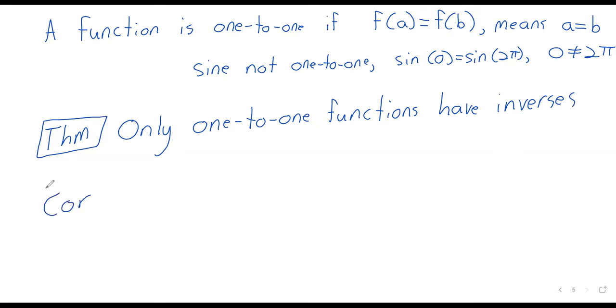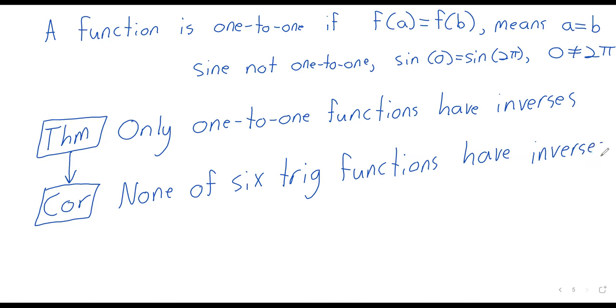And then we can have a statement or a theorem. So, only one-to-one functions have inverses. Or stands for corollary. It's a fact that follows immediately from another theorem. This theorem immediately gives us this corollary that none of the six trig functions have inverses. Because none of the six trig functions are one to one.